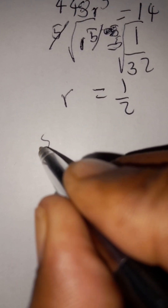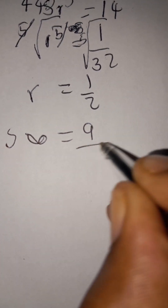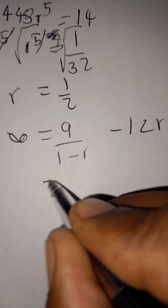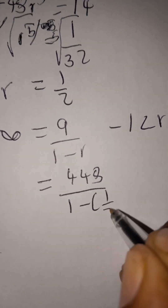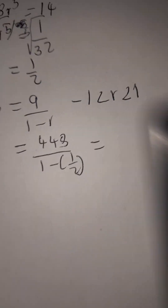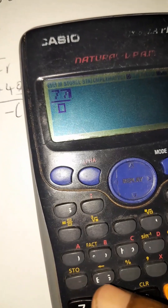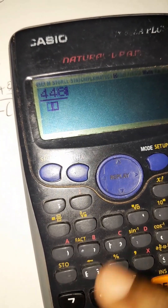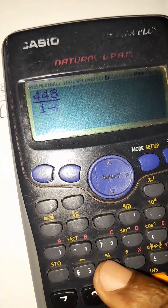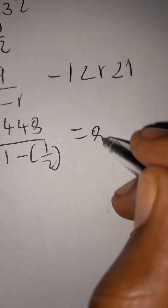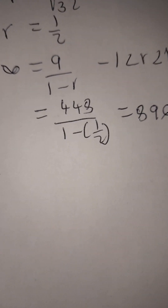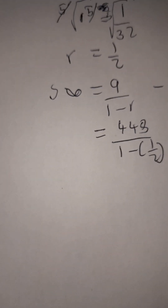The sum to infinity formula is S∞ = a/(1 − r), valid when −1 < r < 1. Our a = 448 and r = 1/2, so S∞ = 448/(1 − 1/2) = 448/(1/2) = 896. The sum to infinity is 896.